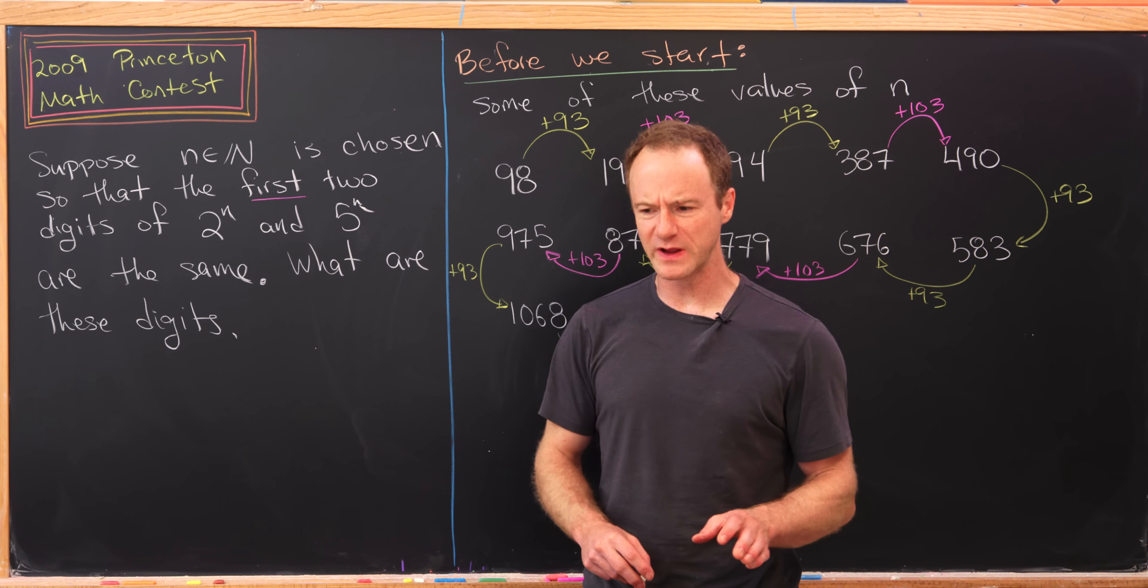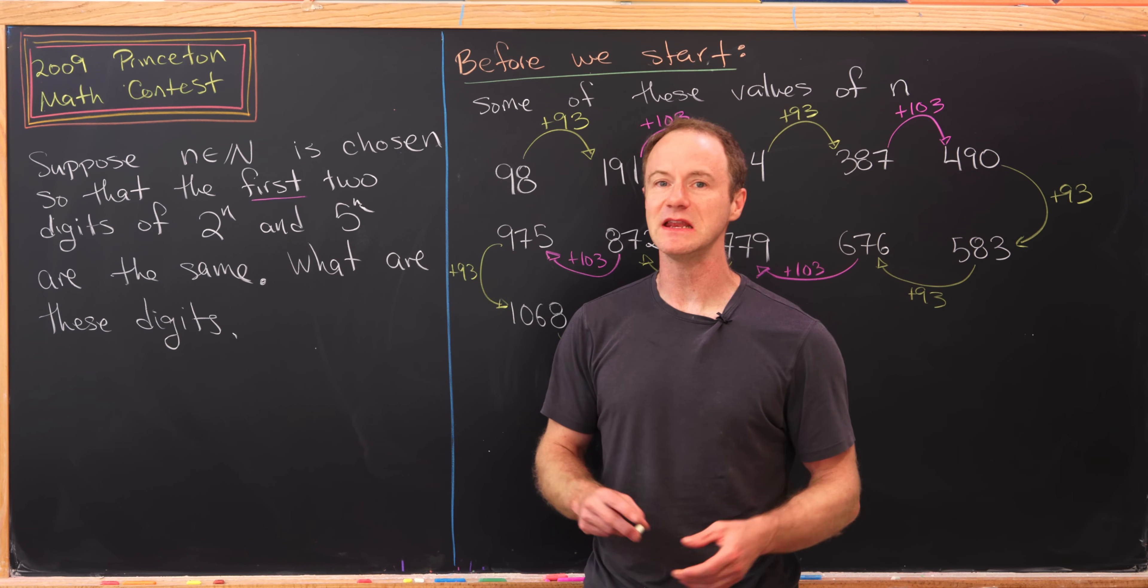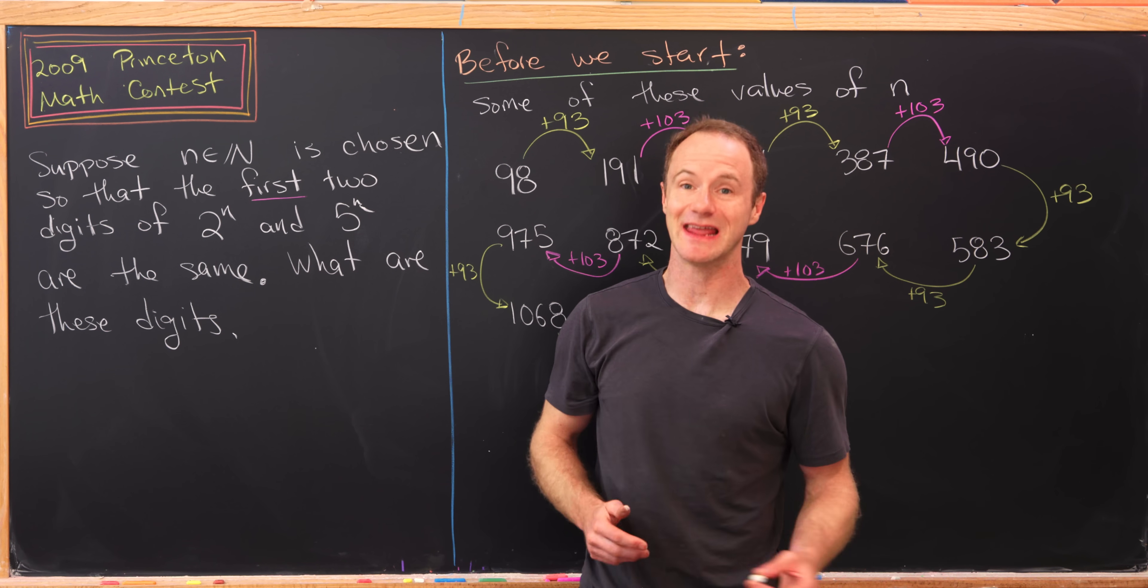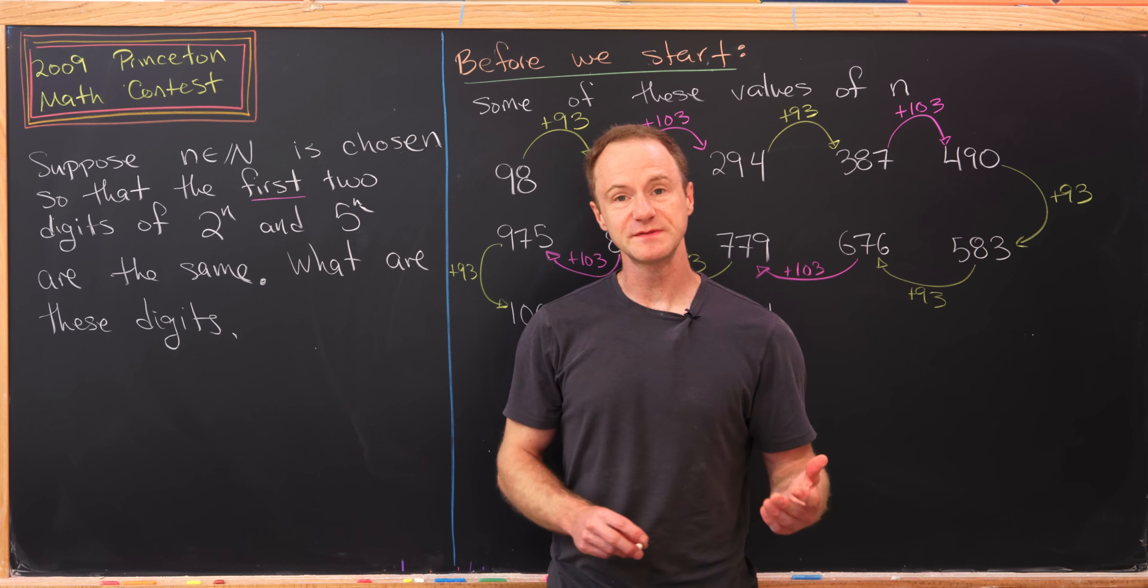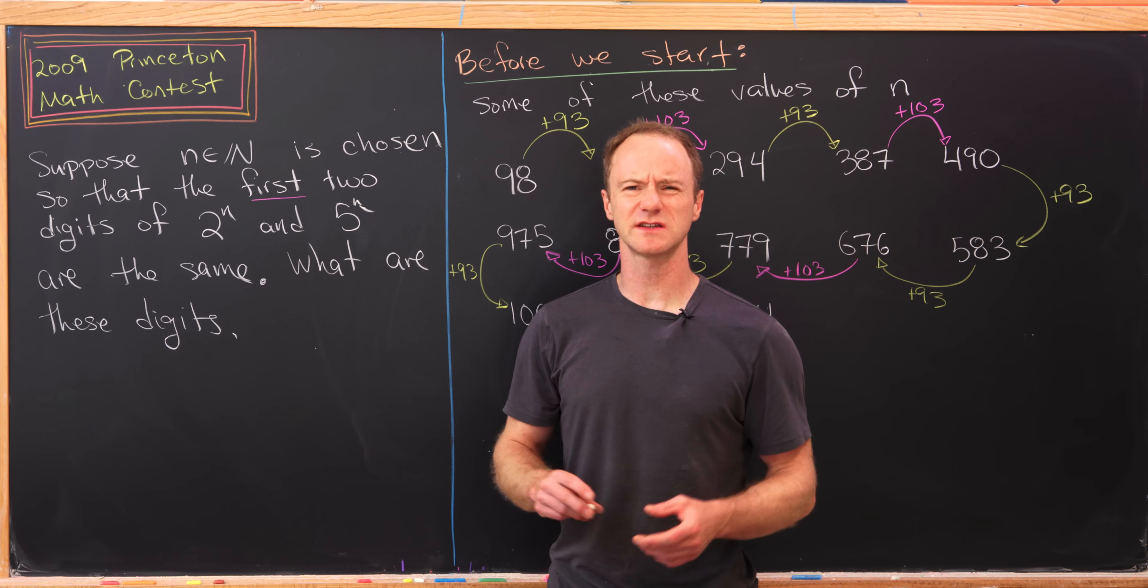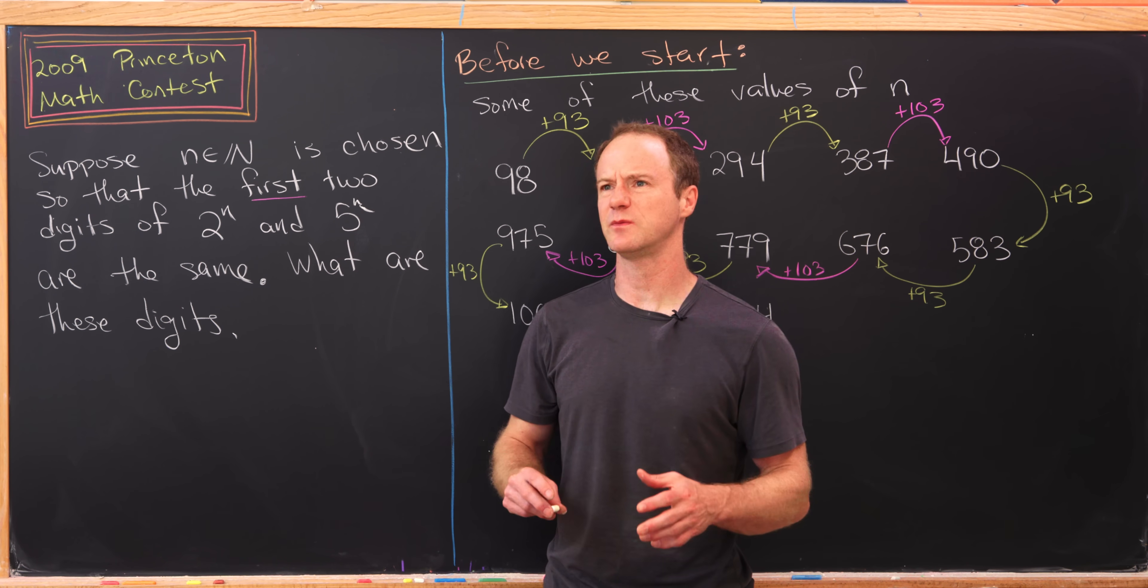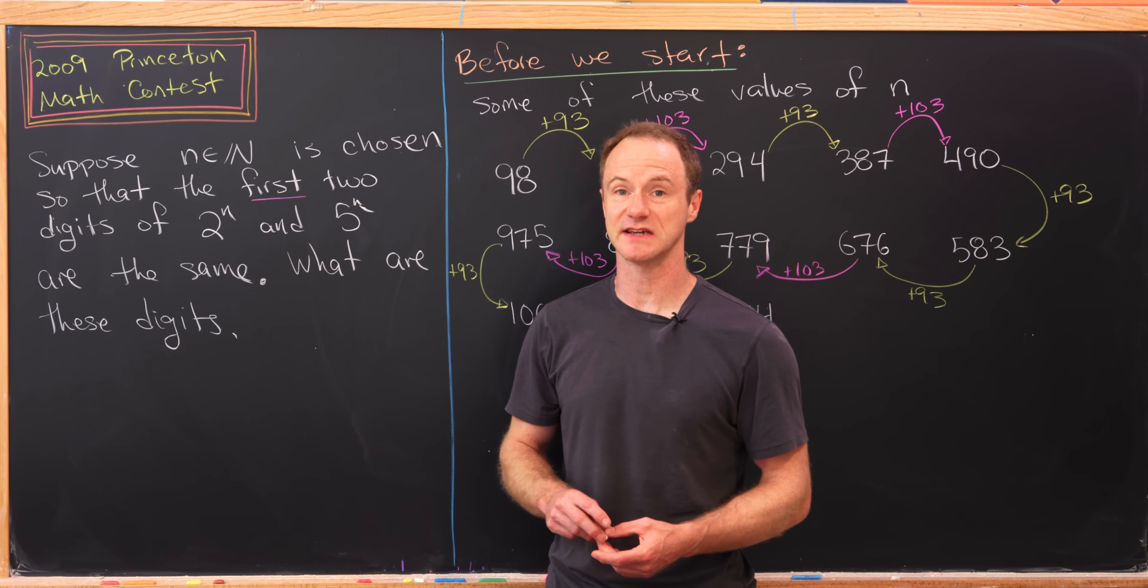Before we get started, it's not immediately clear that such an n exists. That's because the first value of n occurs at a large enough number that it would be hard to check in a contest setting.